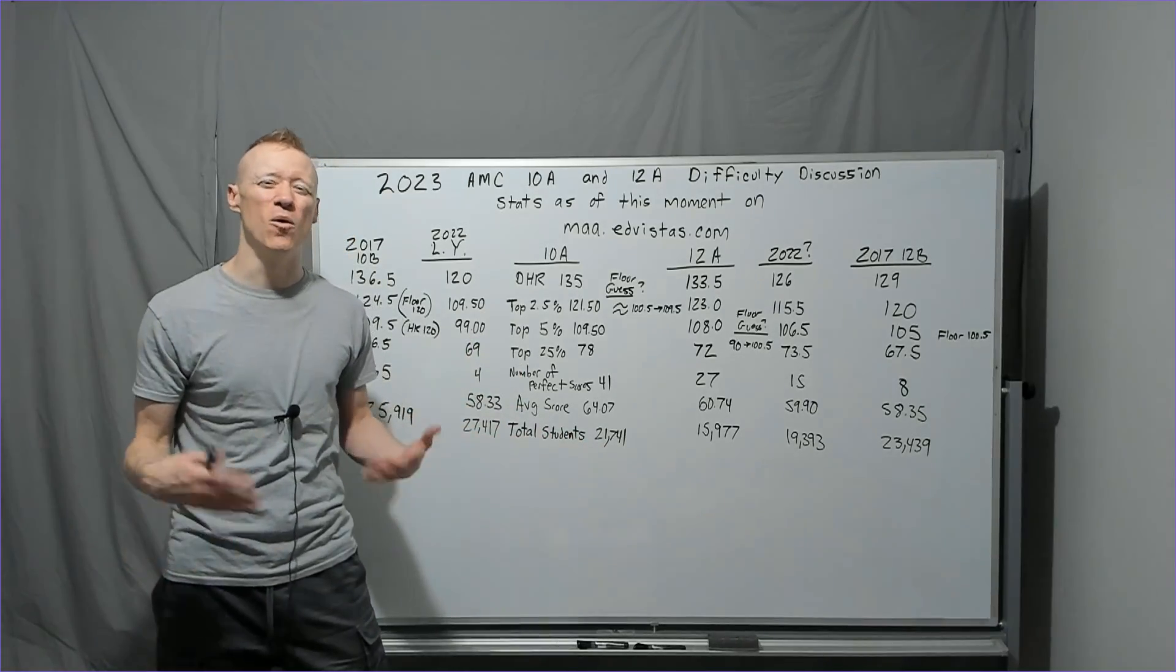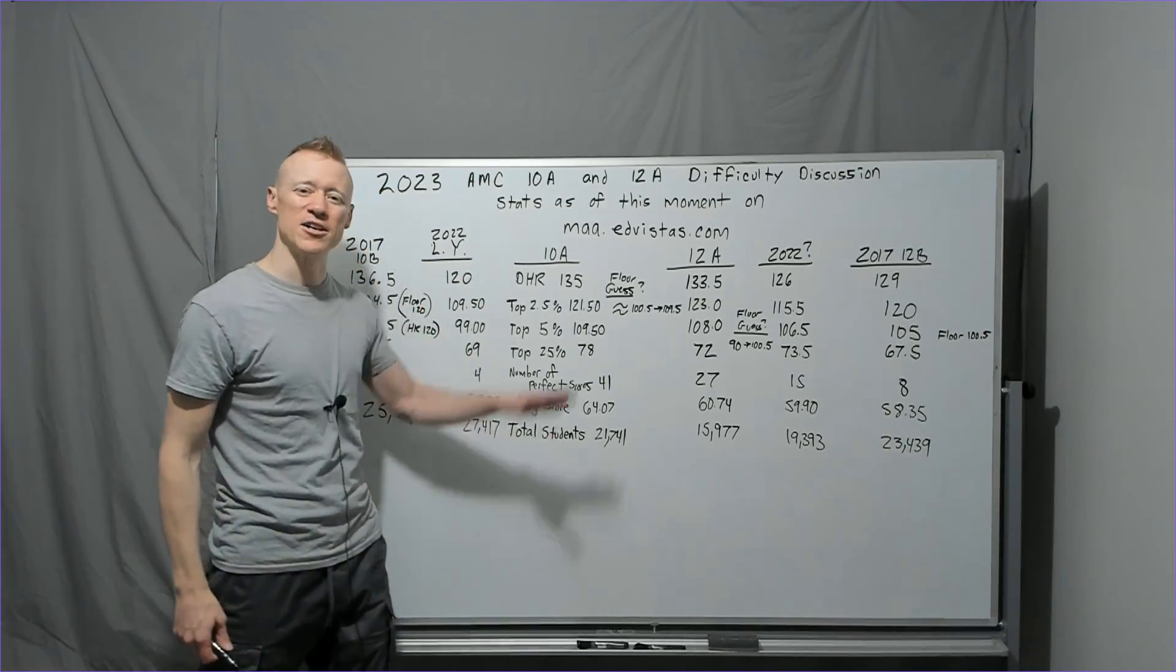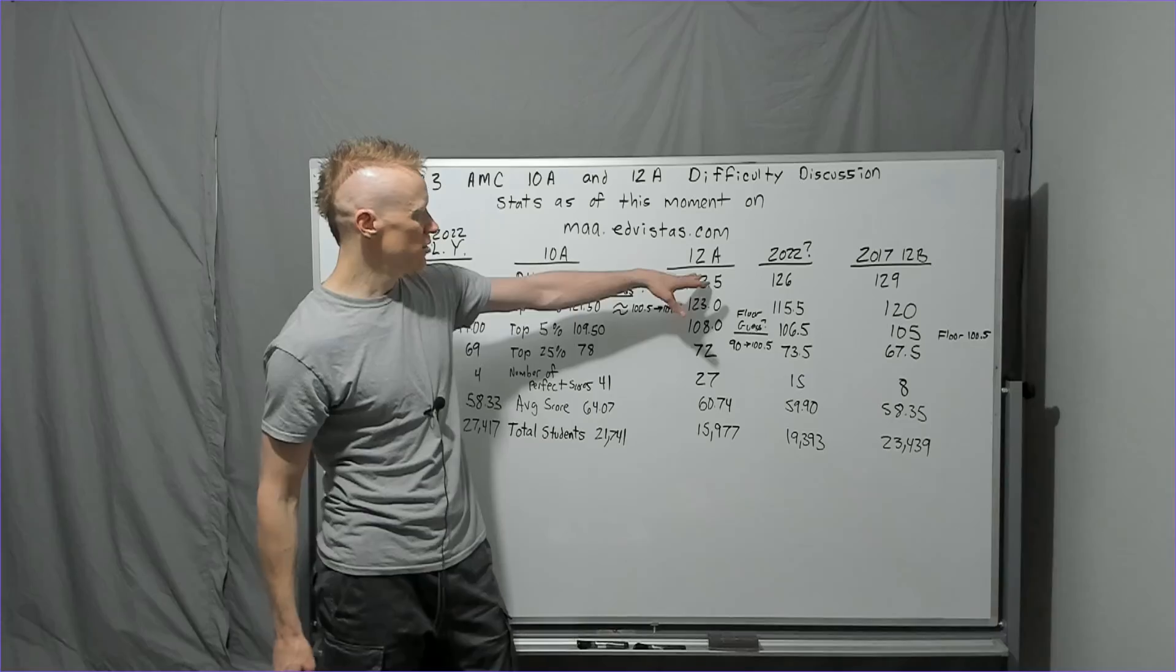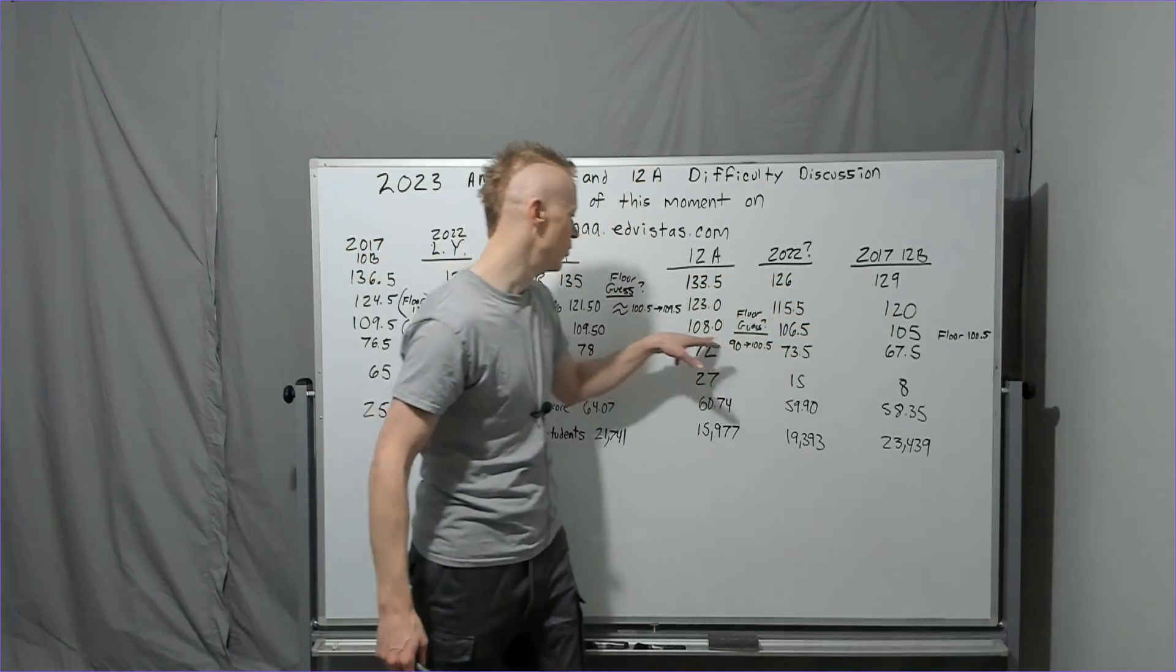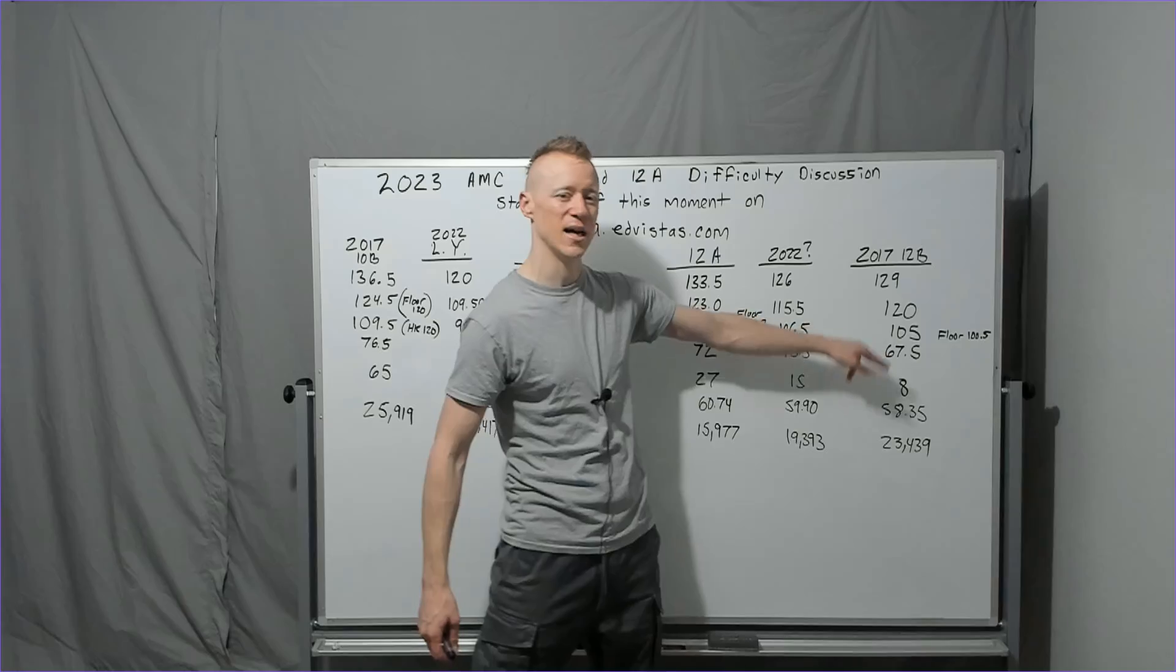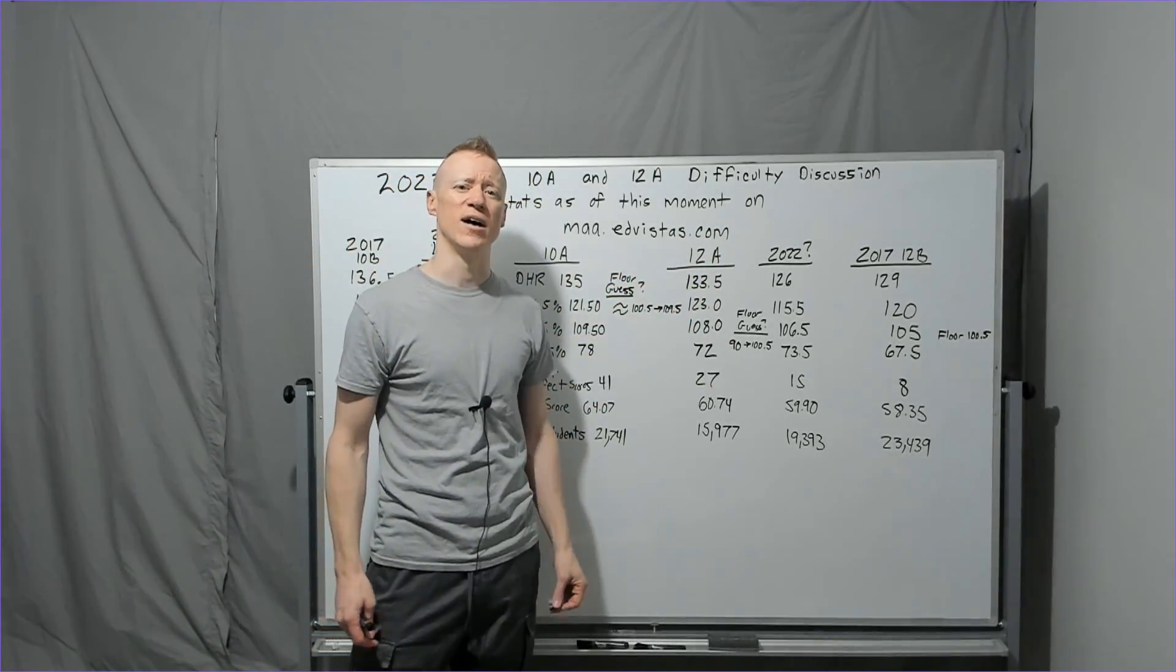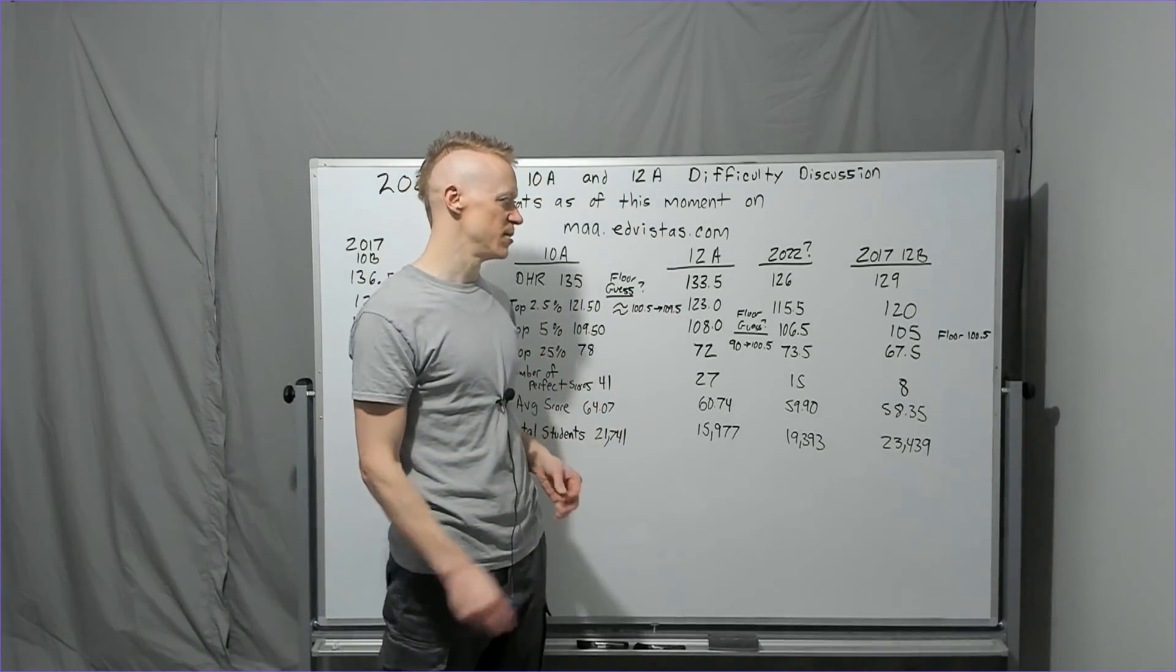When we go over to the 12A and compare, very comparable across the board. The floor in 2017 was 100.5 even though the top five percent was 105. That was still back at a time I believe when they didn't let the floor get above 120 on the 10 and 100.5 for the 12. It no longer has that rule in the official instructions but it used to be there a long time ago.